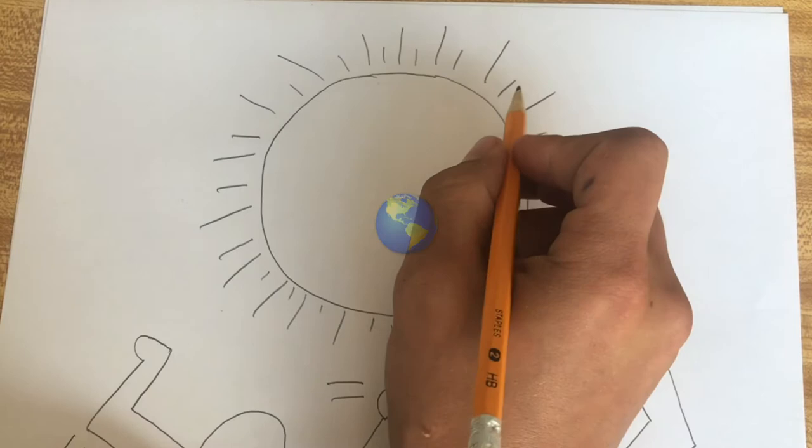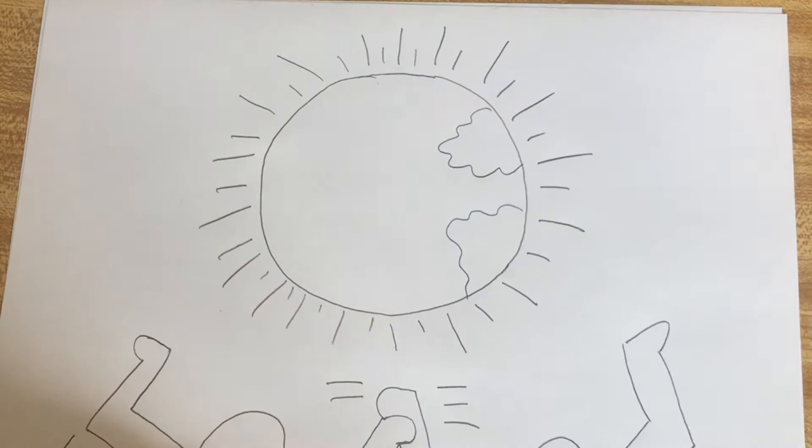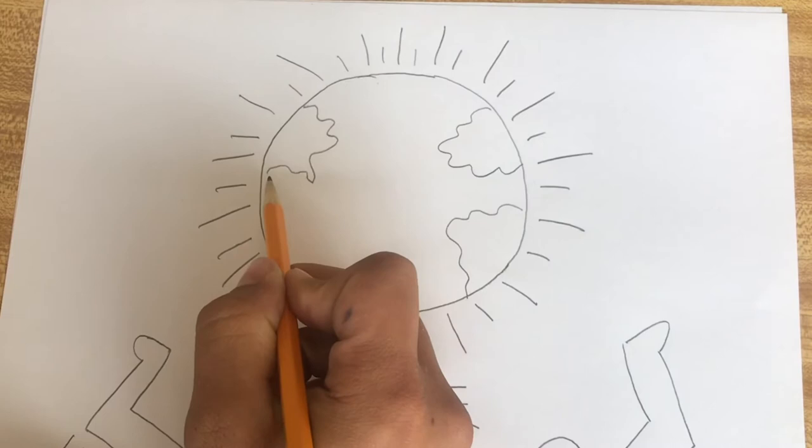Over on this side, we got North America, squiggle wiggle. I'm going to give a little bit of Florida right out there, and then that actually goes right down into South America. So I'm going to go, we'll go a little bit wide, and then it comes a little bit thinner up there.